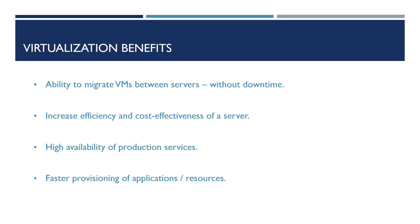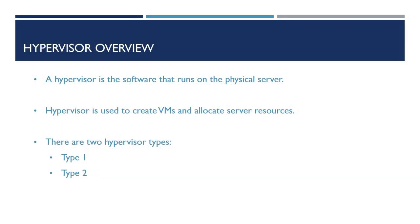In addition, we can also add additional resources to virtual machines extremely easily with virtualization. For example, if we want to add more memory to a virtual machine, we can do this through the hypervisor, whereas with a physical machine we'd have to physically add the memory. The hypervisor is the software that runs on a physical server and is used to create virtual machines and allocate resources from the server.